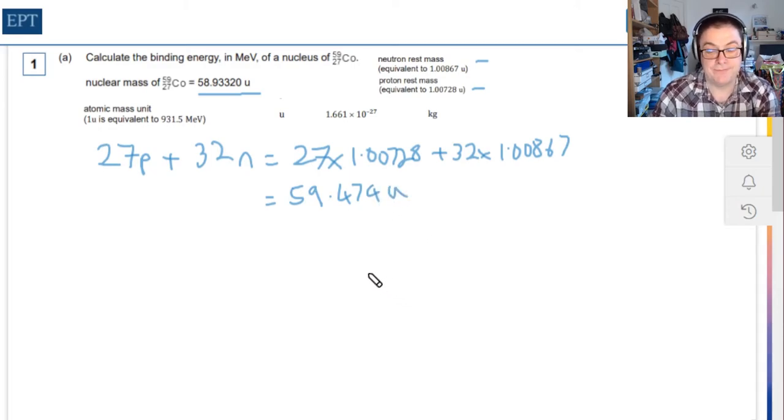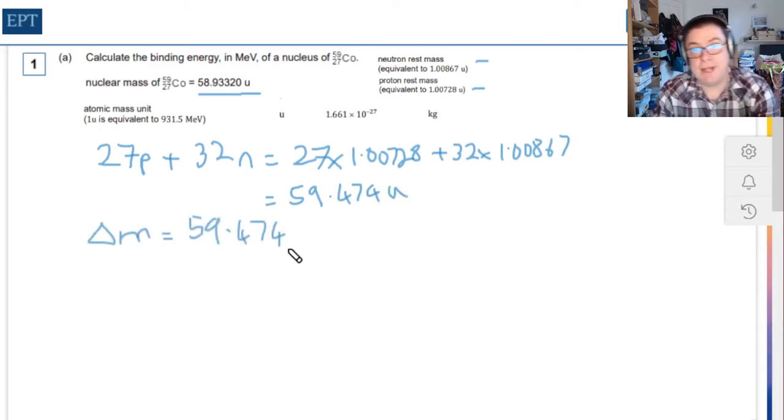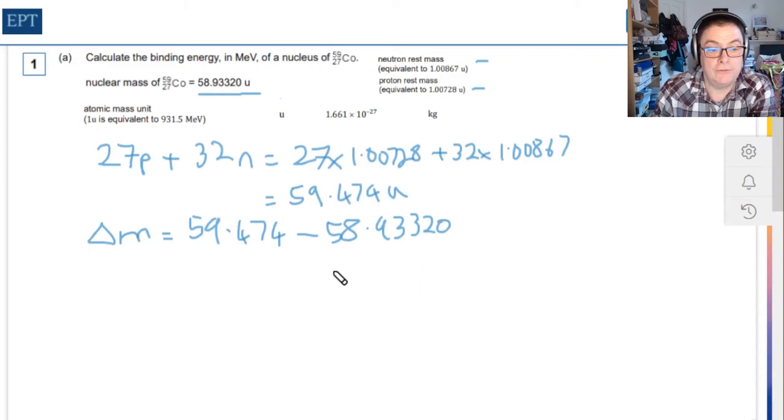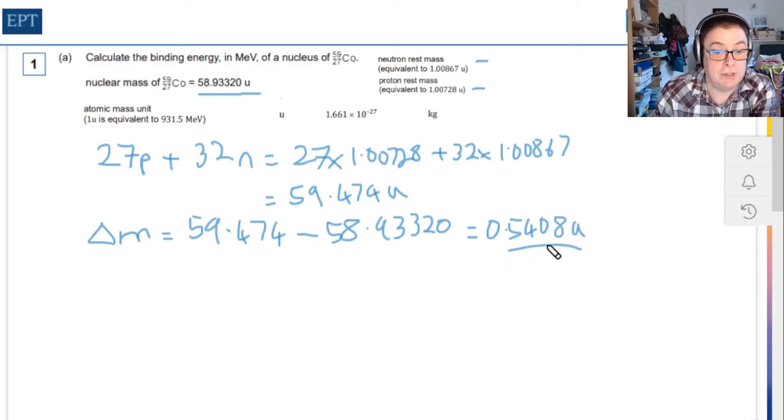If you work that out, you get 59.474 atomic mass units. That means that the change of mass is going to be 59.474 take away the final mass of the nucleus, which is 58.93320, and this is in atomic mass units. When you do that, you will get 0.5408 atomic mass units.